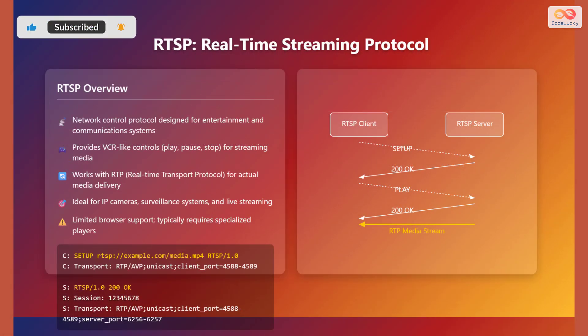Let's start with Real-Time Streaming Protocol, or RTSP. RTSP is a network control protocol designed for entertainment and communication systems. It allows you to send commands to a streaming media server, such as play, pause, and stop, similar to using a video cassette recorder. RTSP works in conjunction with Real-Time Transport Protocol, or RTP, for the actual delivery of the media. It is commonly used in IP cameras, surveillance systems, and live streaming applications. However, it has limited browser support and typically requires specialized players to function.